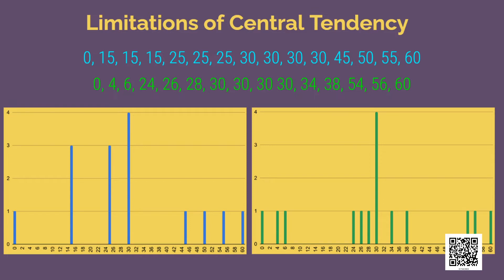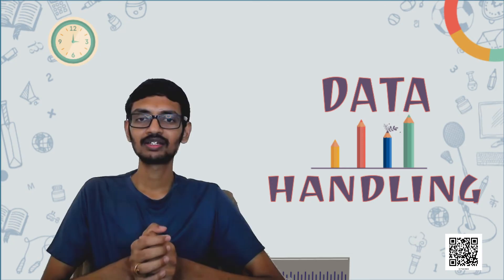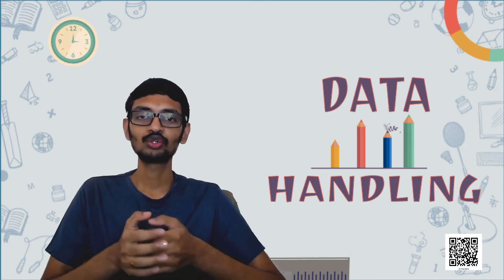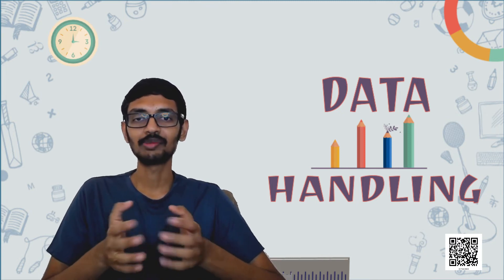The numbers here are picked in a way to make this happen. This is just to show you the limitations of central tendency — that sometimes different groups of numbers may still give very similar measures of central tendency. You will learn some more methods in your higher classes which give better understanding of the group of data.